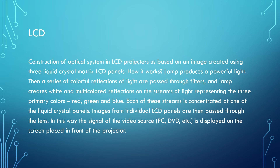What are LCD projectors? The construction of the optical system in LCD projectors is based on an image created using three liquid crystal matrices. How it works: the lamp produces a powerful light, then a series of colored reflections of light are passed through filters. The lamp creates white and multicolor reflections on the stream of light representing the three primary colors — red, green, and blue. Each of these streams is concentrated at one of the liquid crystal panels. Images from individual LCD panels are then passed through the lens. In this way, the signal of the video source — for example, a PC or DVD — is displayed on the screen placed in front of the projectors.